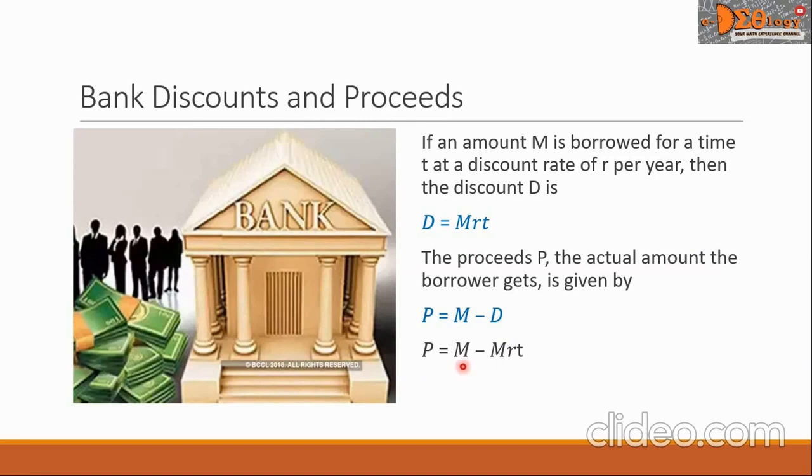In these two terms, there is a common factor, and that is M. We can factor out that capital M, so on the next line, we have capital P equals capital M times the quantity 1 minus the product R times T. And these are now our two working formulas: this formula for proceeds, and this formula for the discount.